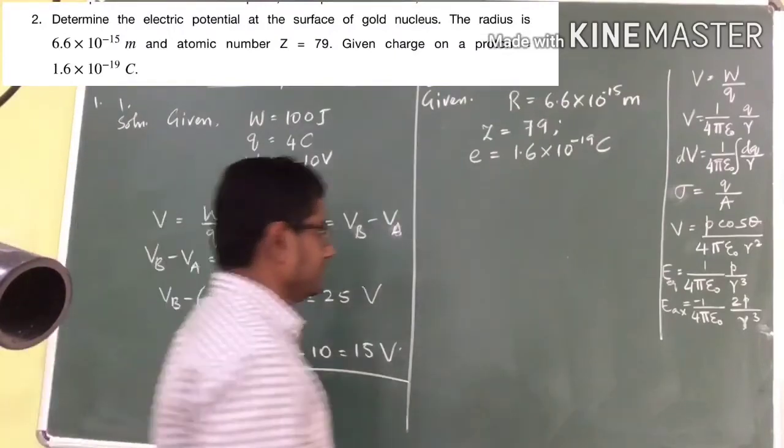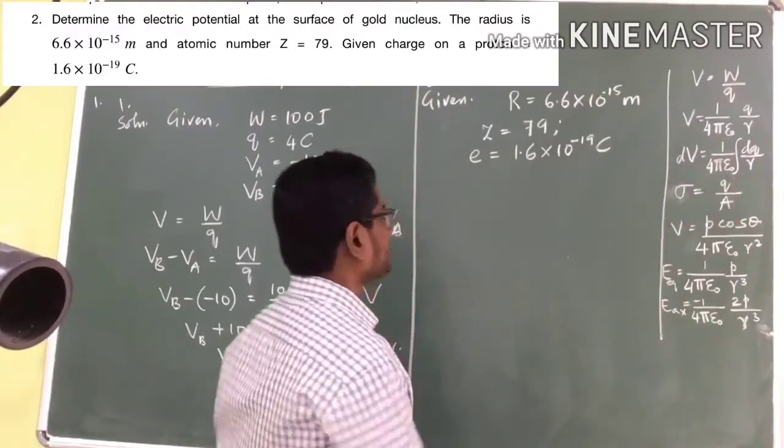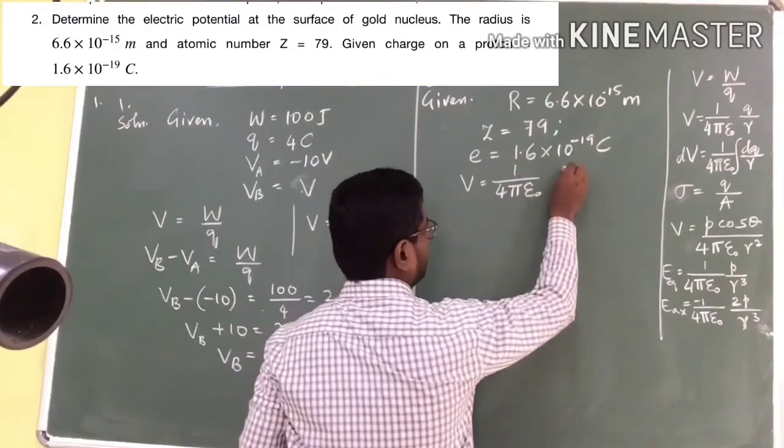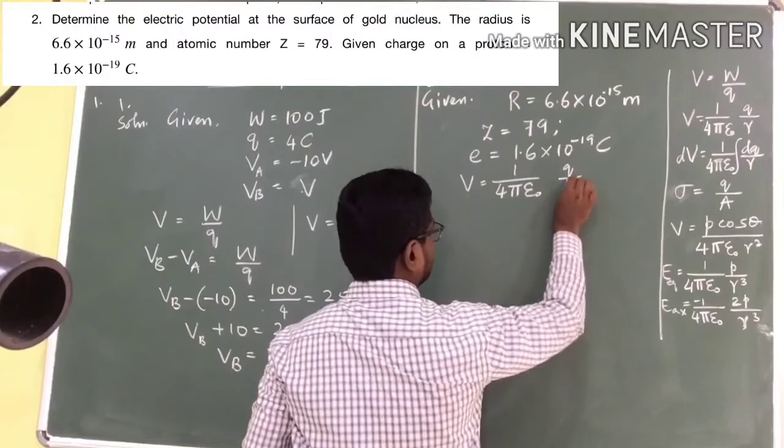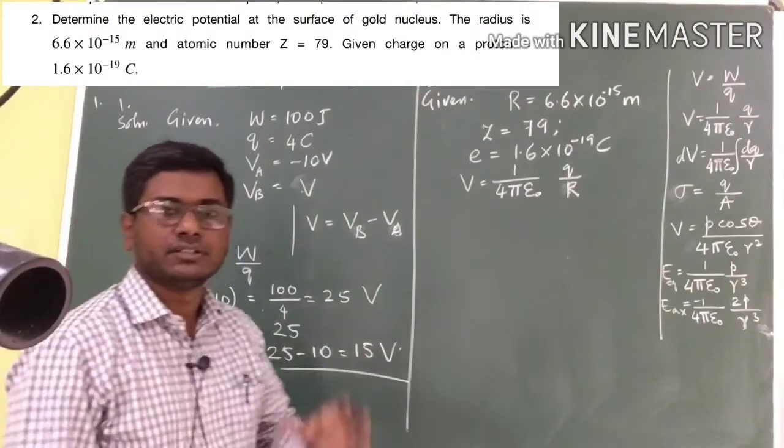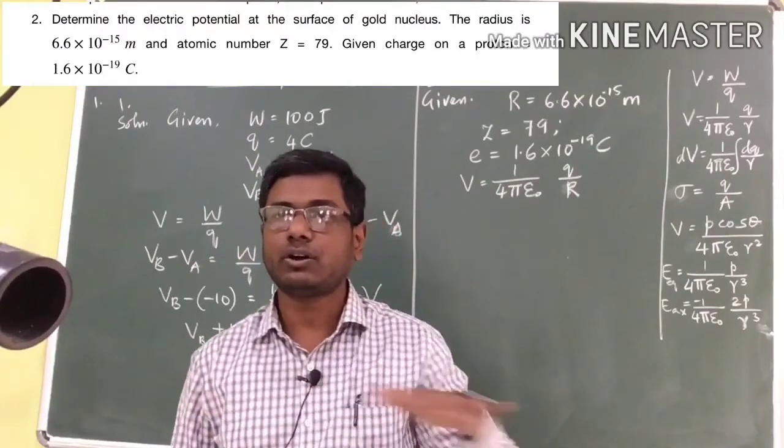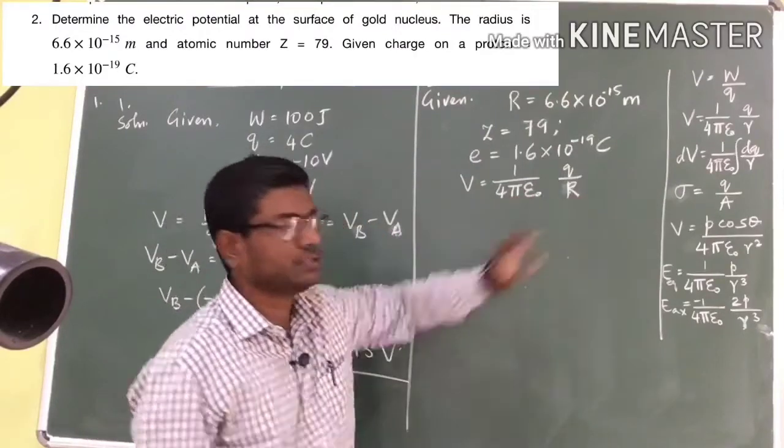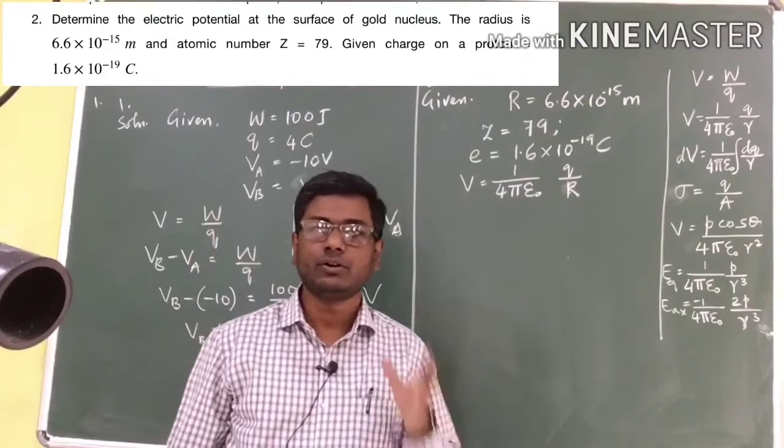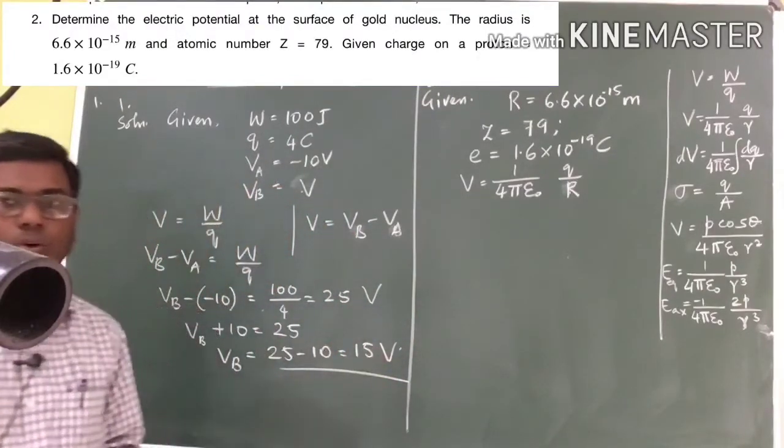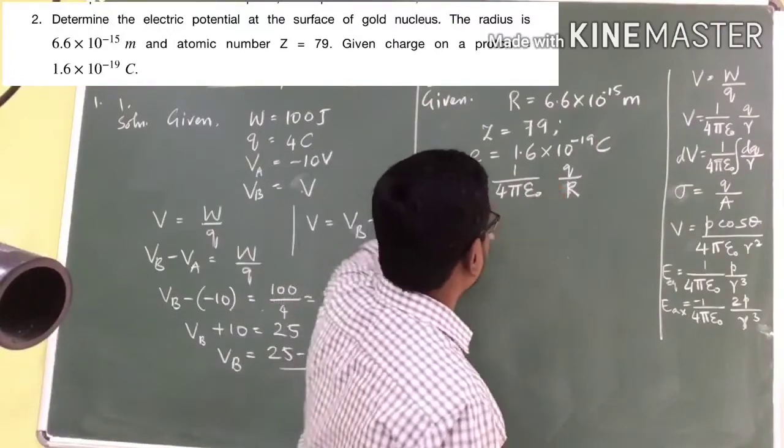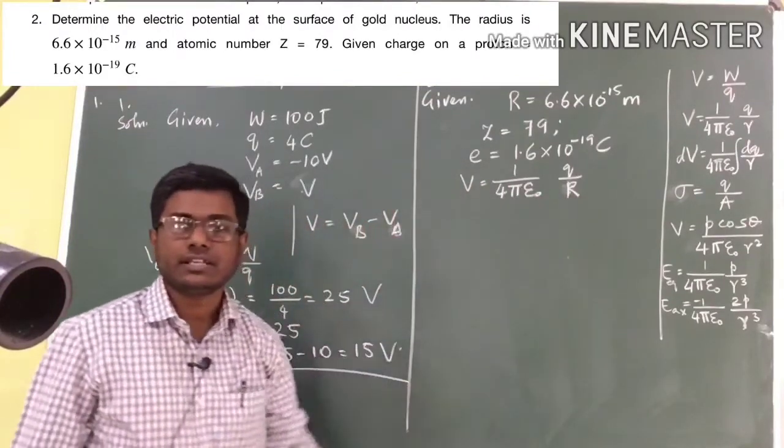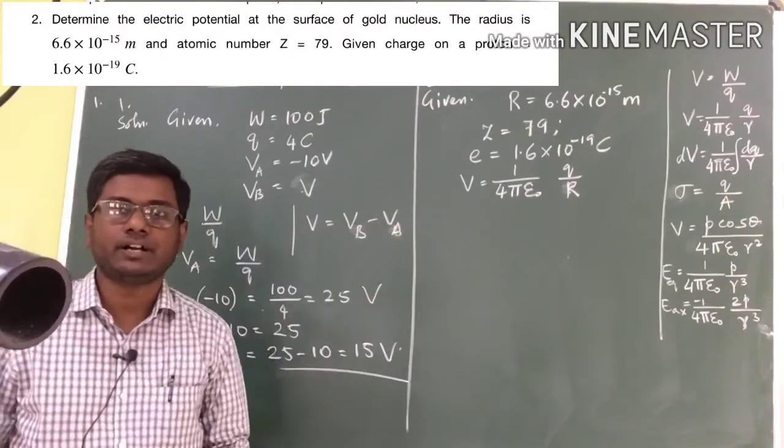Next, what we need is this equation. We have V is equal to 1 by 4 pi epsilon naught Q divided by R or in this case it will be capital R. Because we are talking of the potential at the surface. We are not talking of the potential outside the surface. It will be at the surface. We have to just take the radius of whatever the sphere we are talking of or whatever the material we are talking of. In this case, it is the gold nucleus. Now we have to find this V. 1 by 4 pi epsilon naught is a constant. R is a known quantity. R is given in the question. Q is kind of unknown quantity. But it is not totally unknown. It is given indirectly.